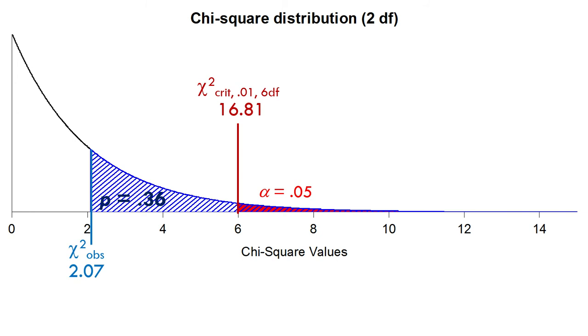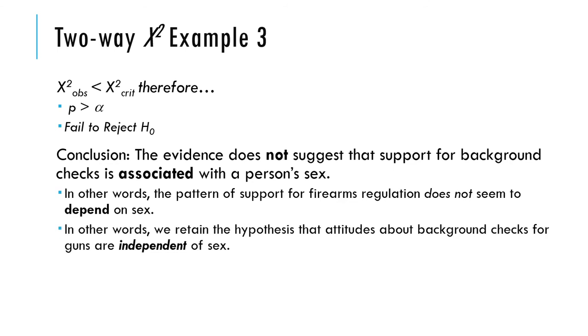Our p-value is gigantic, it's 0.36, much greater than 0.05. Actually that shouldn't say 0.05, that should say 0.01. It's much greater than 0.01. We've failed to reject the null hypothesis. The evidence did not suggest there's any association. The evidence suggests independence. The evidence is consistent with the null hypothesis of independence. The pattern of support for firearms regulation is independent from a person's sex. Since that omnibus test was not significant, we would not follow up with any other tests. There's nothing to find here.